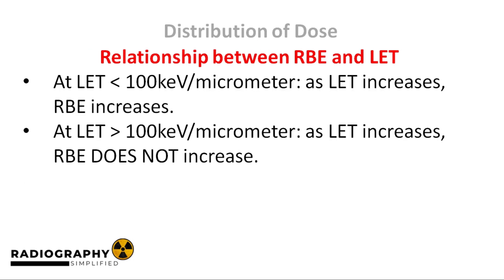Now, how does RBE relate to LET? High linear energy transfer sources generally have a high relative biologic effectiveness when compared to low energy transfer sources. Another way to put this is by saying that as LET increases, RBE also increases. However, this is only true up to a certain energy level. At LETs above 100 kilo-electron volts per micrometer, a higher LET will not lead to greater relative biologic effect. This is because at this point, the radiation is already producing maximum damage and increasing the LET couldn't possibly make it worse than it already is.